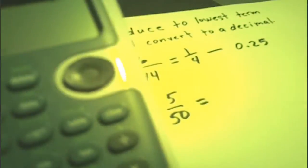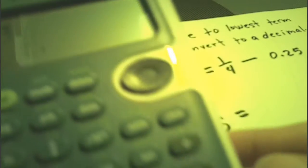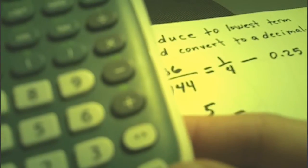First enter the whole number four, then press the button to the right, then enter the numerator 5, press the button down, and enter the denominator 50. Then press Enter.